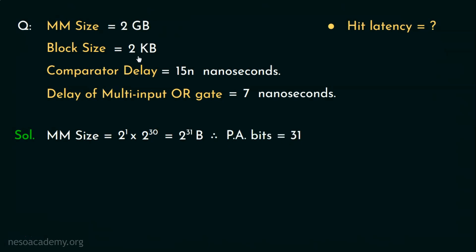The block size is given as 2KB which is 2 to the power 11 bytes. Therefore, the offset is going to be 11 bits.